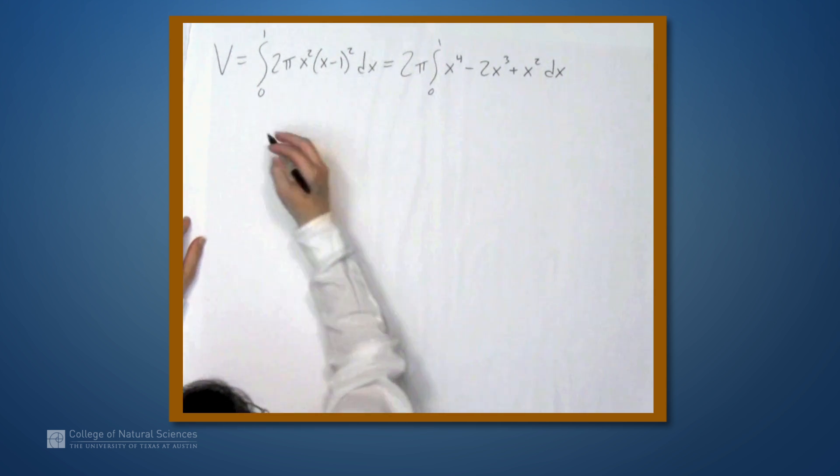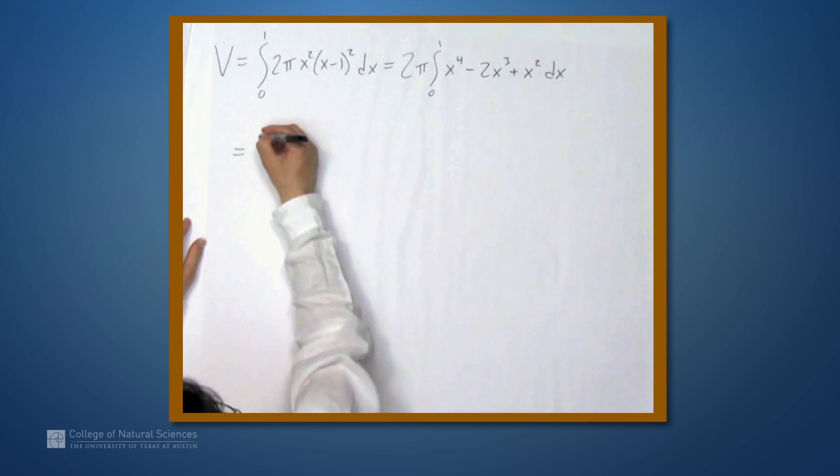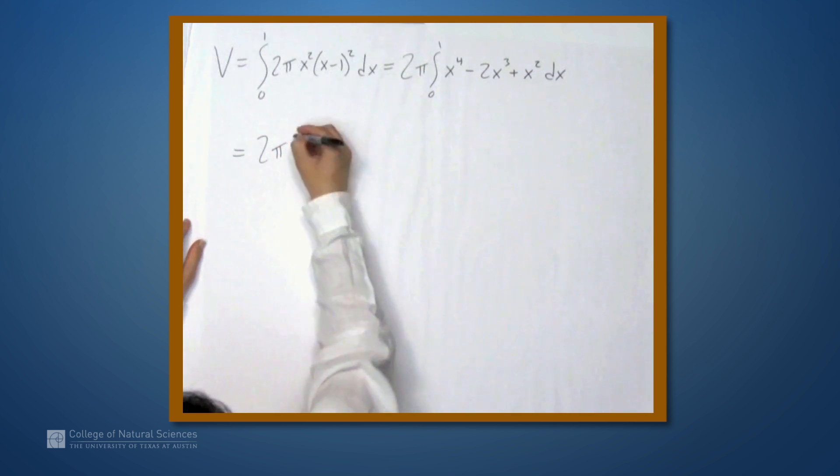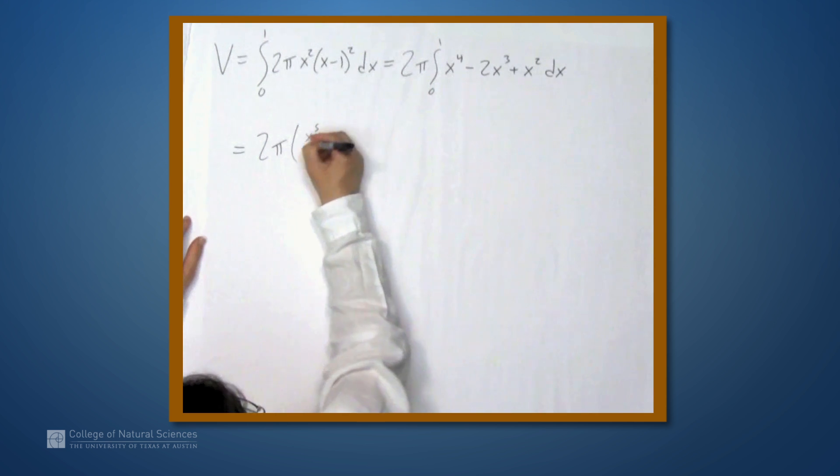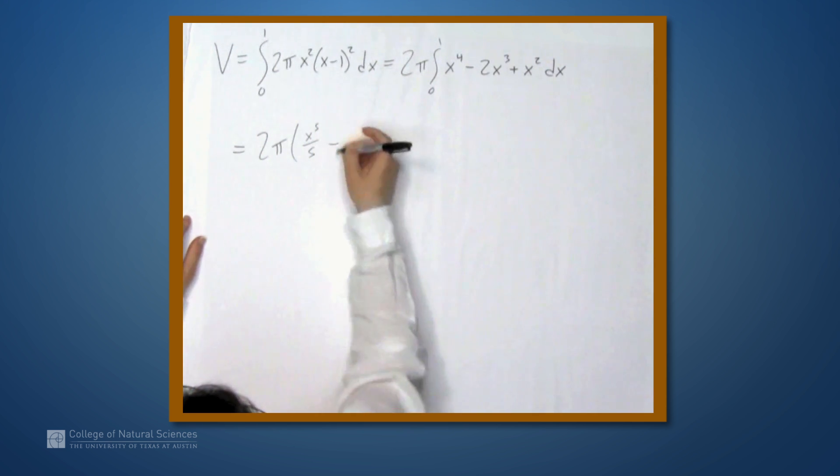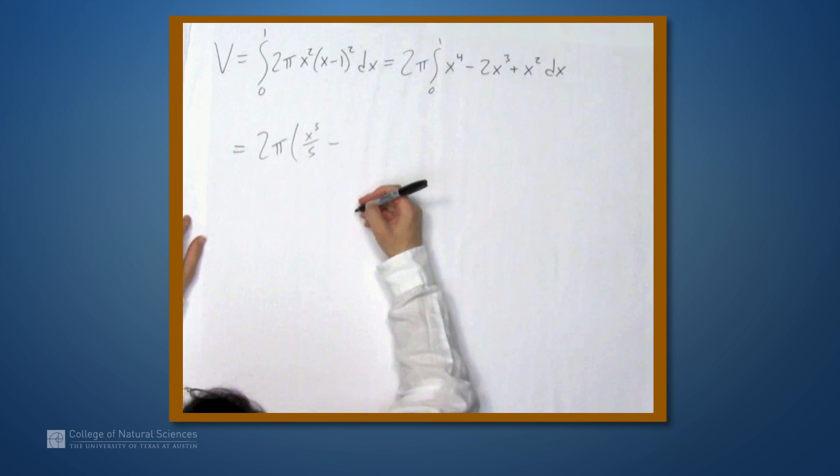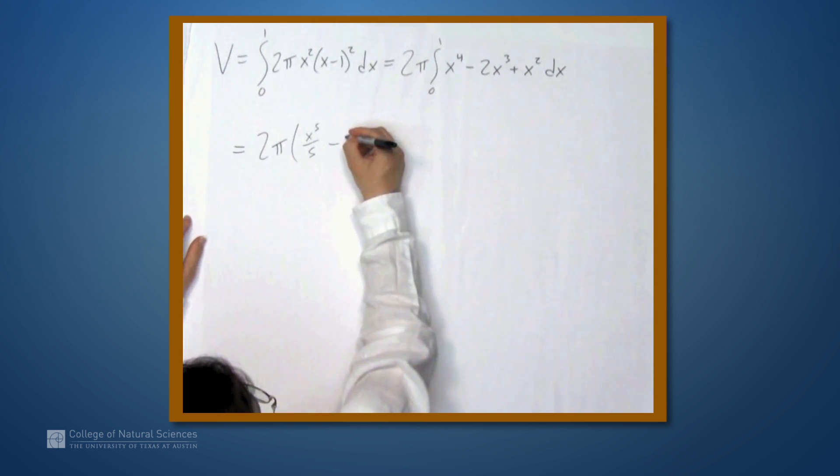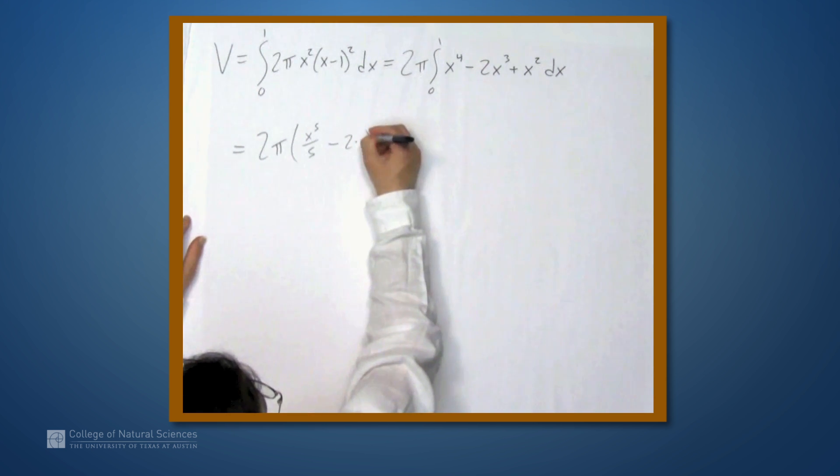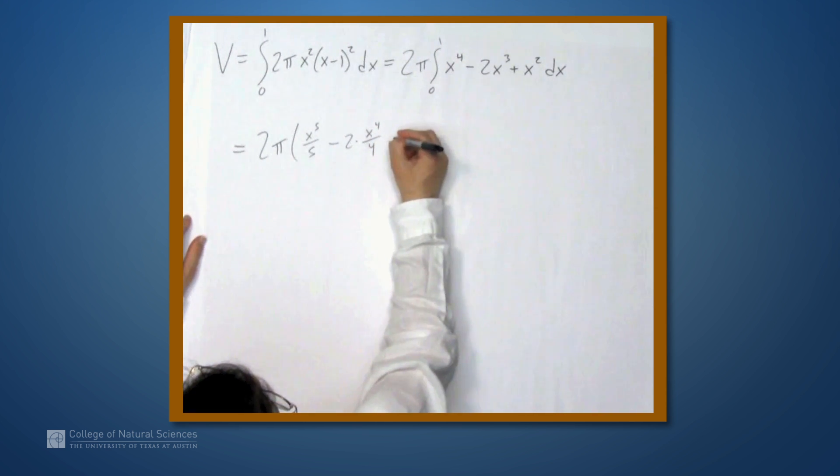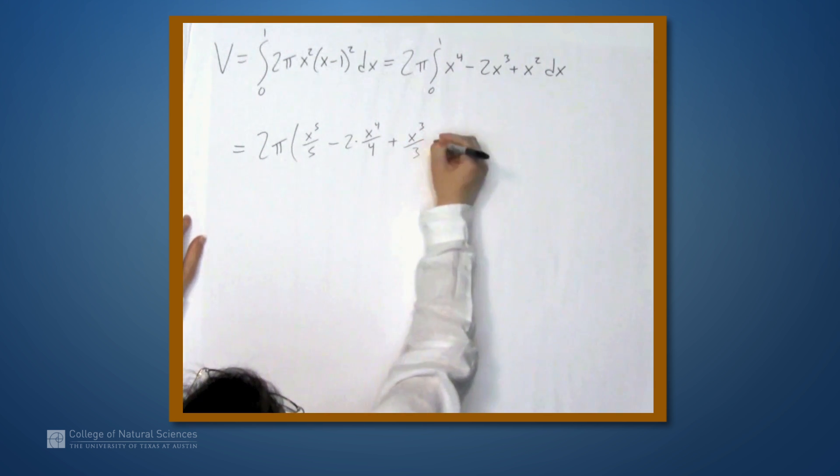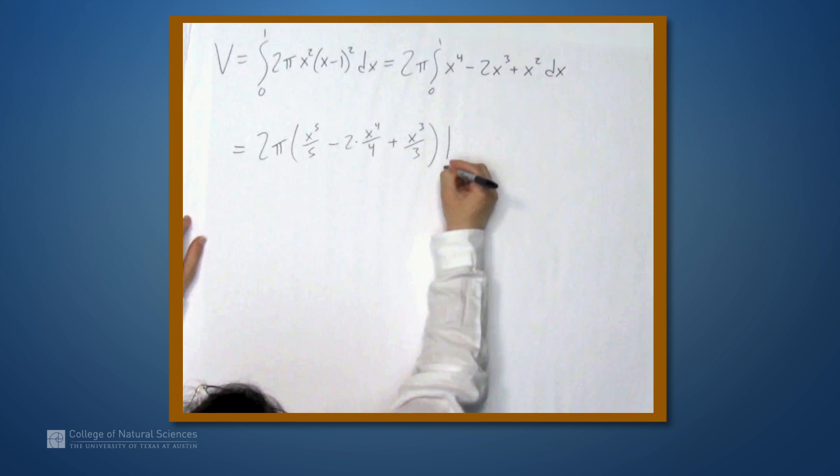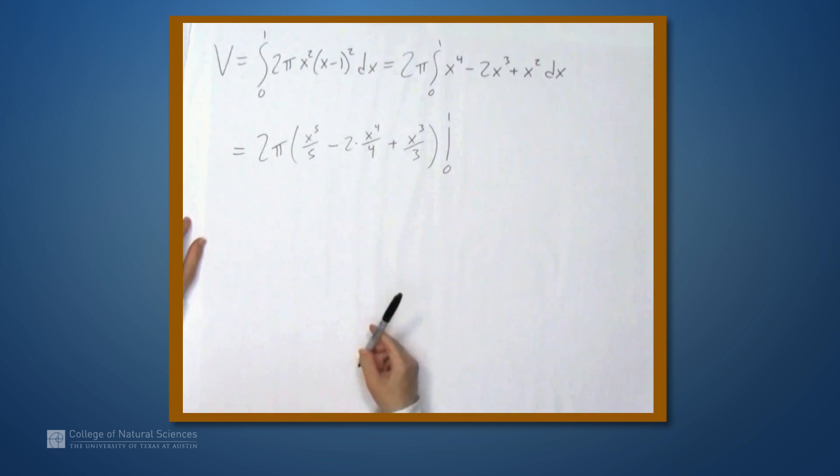So, let's find an antiderivative for each of these terms. 2π, antiderivative of x to the fourth is x to the fifth over 5 minus 2 times an antiderivative of x cubed, so this is 2 times x to the fourth over 4 plus antiderivative of x squared, which is x cubed over 3. And we're evaluating this between 0 and 1.